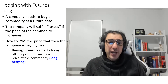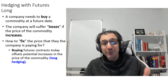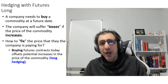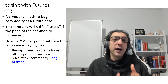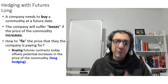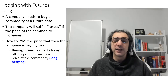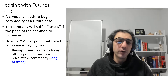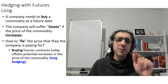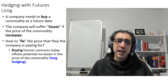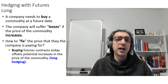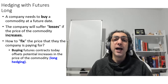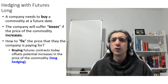You can also use futures contracts for hedging if you need to purchase something in the future. In this case, you need to take the long position. For example, if a company is going to buy a specific commodity sometime in the future and is afraid prices may go up, the company can take a long position for that commodity. In this case, the company is able to fix the price it will pay in the future. Buying a futures contract today offsets potential increases in the price of the commodity. The act of buying a futures contract to protect from rising prices is called long hedging.